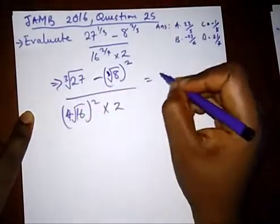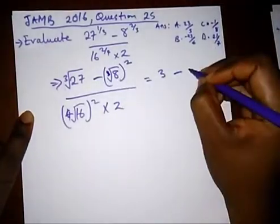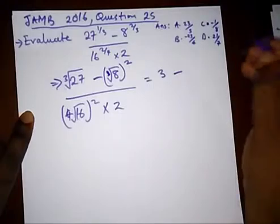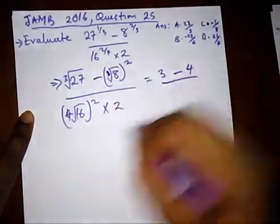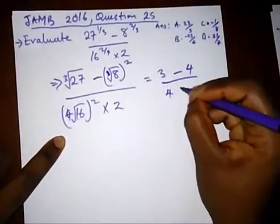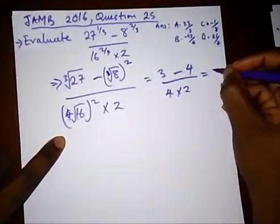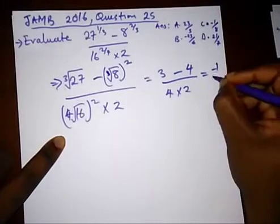The cube root of 27 is 3 minus the cube root of 8 which is 2, and 2 squared is 4. The fourth root of 16 is 2, and 2 squared is 4 times 2. We're left with 3 minus 4 which is minus 1, and 4 times 2 is 8. Our answer is option C.